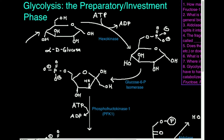First enzyme, step one: hexokinase. What does 'hexo' mean? Hexo usually refers to a six-carbon sugar — a hexose is a six-carbon sugar, and glucose is a six-carbon sugar. What's a kinase? A kinase is an enzyme that uses ATP to add a phosphate group to some molecule. So hexokinase should add a phosphate to glucose because that's the hexose here.